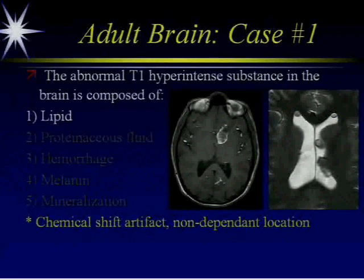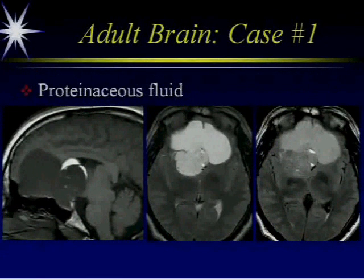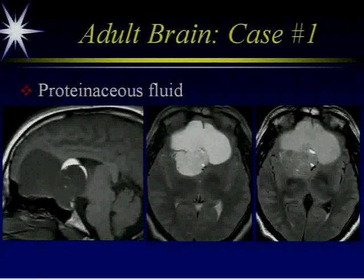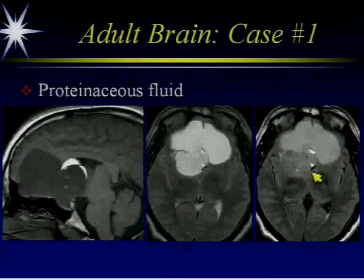All of those substances I mentioned are intrinsically bright on T1. Here we have a case of craniopharyngioma, and in the cysts of the craniopharyngioma are proteinaceous fluid. Depending on the concentration of the protein, you can get intrinsic T1 hyperintensity. You can see the protein content in this cyst — between the T2 and the FLAIR image it is not saturated out on FLAIR.